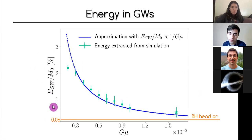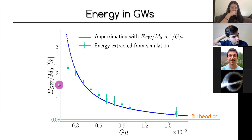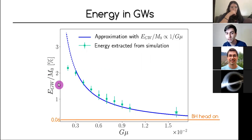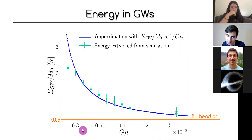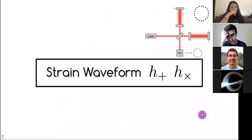We can quantify the energy emitted in gravitational waves relative to the initial mass. For comparison, the first LIGO event was roughly 30 solar masses colliding and about 6 solar masses were emitted as gravitational waves — about 6%. For black hole head-on collisions it's about 0.06%. For our cosmic string loops we see values on the order of 1-2%, and the smaller Gμ, the higher this fraction goes.